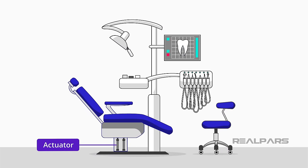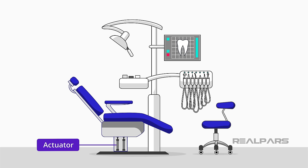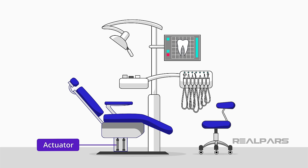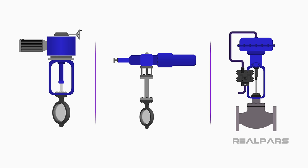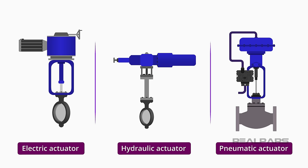For example, your dentist uses an actuator to move the chair up and down. There are three typical types of actuators used in industry as defined by their energy source: electric, hydraulic, and pneumatic.